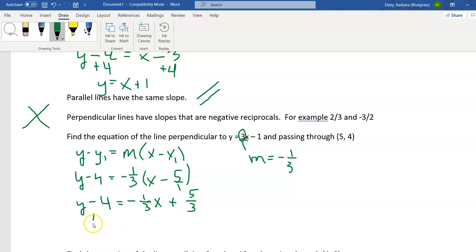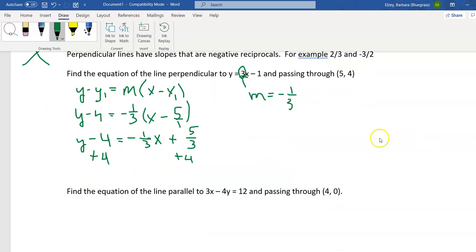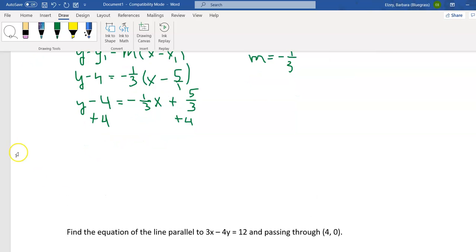Now let's finish solving for y, let's add our 4. We need to be able to add these two together, and to do so we need a common denominator. Let's think of making our 4 over 1. They both need to have a denominator of 3 in order to add them together, so multiply by 3 over 3, and this is really 12 over 3. Let's add 5 thirds and 12 thirds. So we'll have y equals negative 1 third x, and 5 thirds plus 12 thirds will be 17 thirds.